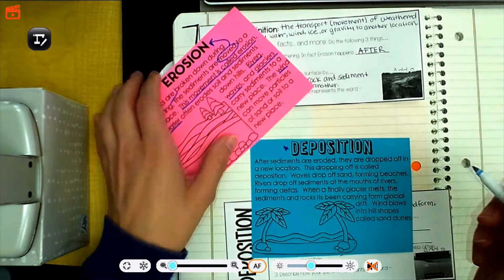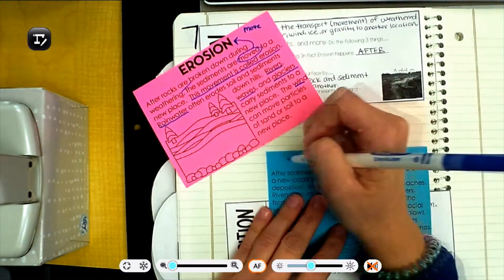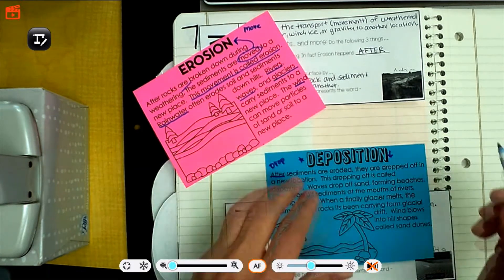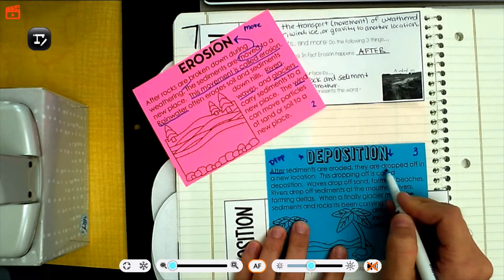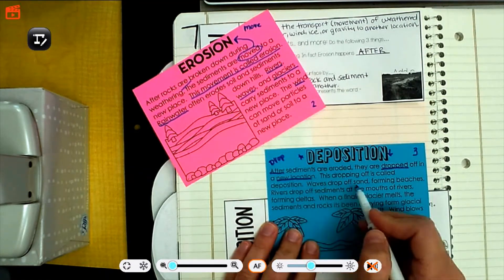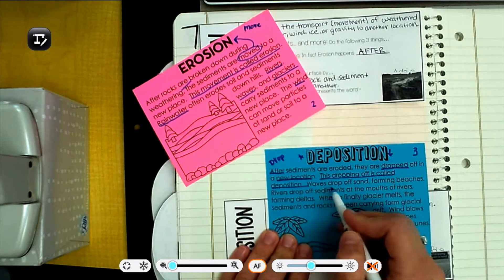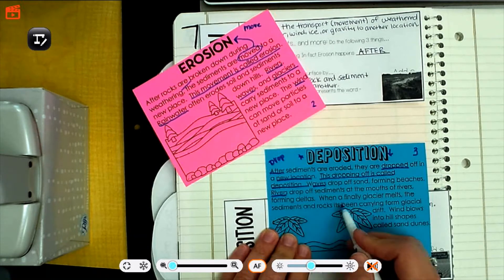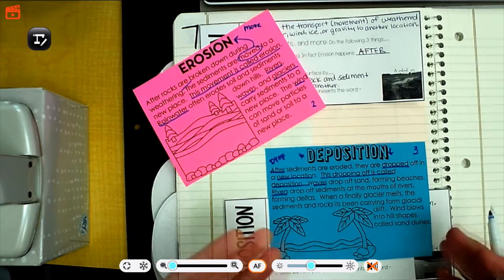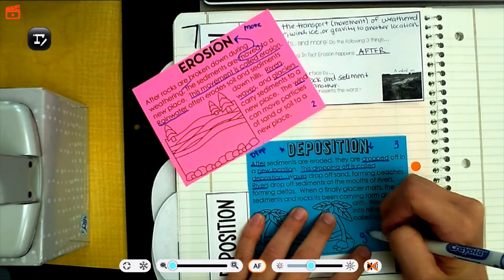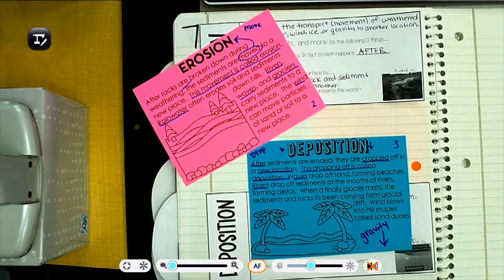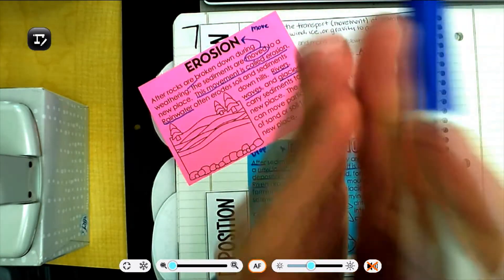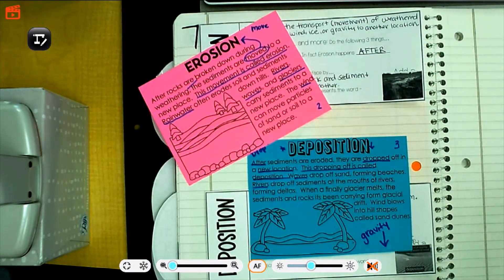Okay, now we've got deposition. So let's write it in here. Move, drop. Okay. After sediments are eroded. So that's after. So this is the third step. So this was step two. This is step three. They are dropped off in a new location. This dropping off is called deposition. Waves can do it. Drop off sand forming beaches, rivers, drop off sediments in the mouths of rivers forming deltas. And finally, glacier melts the sediments and wind can blow them into those shapes. So I know it sounds like the movement, but think about this as the last step where gravity takes effect and drops things down. So it's like those things are finally, so in erosion it's where those things are holding it and moving it. And then in deposition, it's when gravity takes over and stops those things from moving it. So like when all those things let go of it, that's when deposition happens.